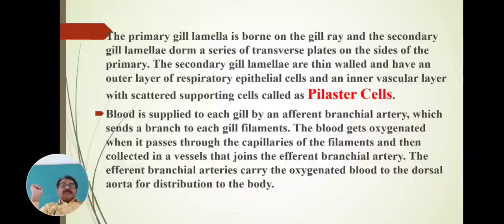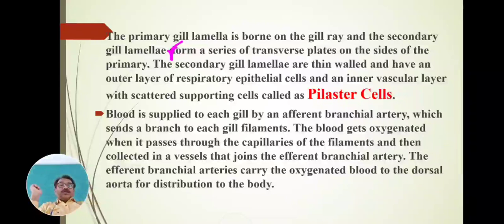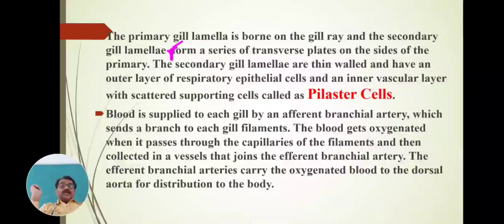The primary gill lamella is borne on the gill ray, and the secondary gill filaments bear a series of transverse plates on the sides of the primary gill lamella. The secondary gill lamellae are thin-walled and have an outer layer of respiratory epithelial cells and an inner vascular layer with scattered supporting cells called pilaster cells, which are important in supporting the respiratory epithelium.